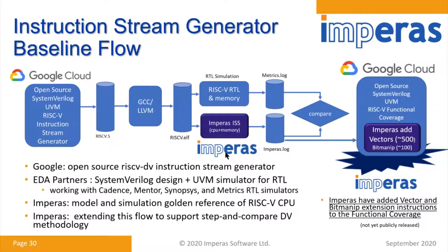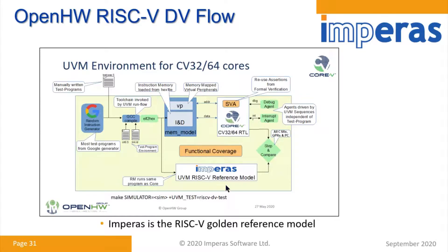The basic flow runs through to end of simulation, writes out log files, and then compares them — a post-process through a neutral format — and includes functional coverage. For customers we've added vectors and bit manipulation coverage. We've also extended this to support step-and-compare. We've been working with an open hardware group doing a RISC-V core based on ETH pulp cores, who are using the Imperus reference in exactly this type of flow — with directed and random tests, generating instruction streams, comparing them with their RTL against the Verilog simulator to see the quality and detect the moment there's a divergence.